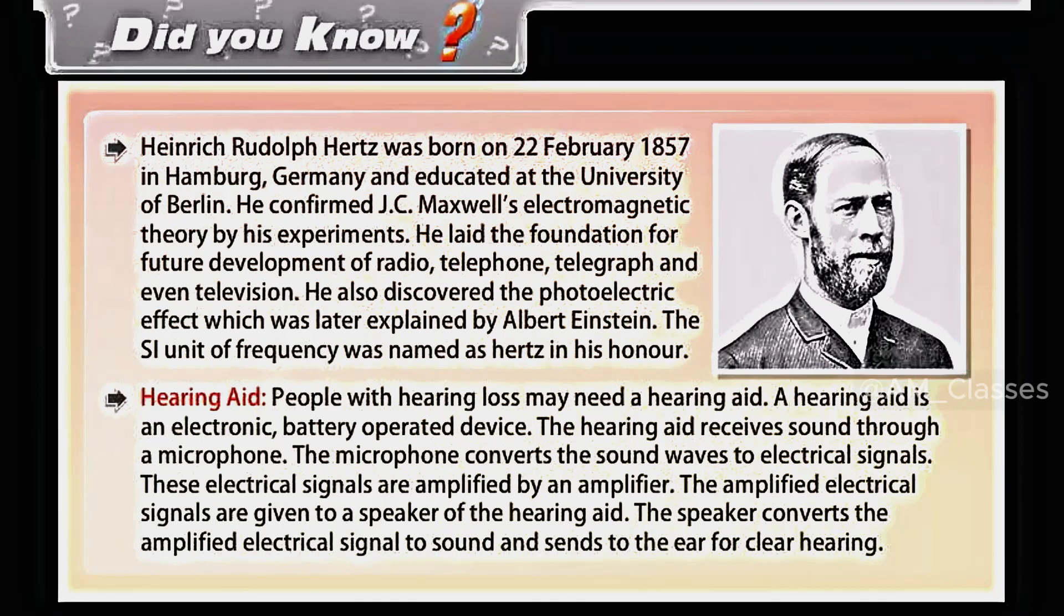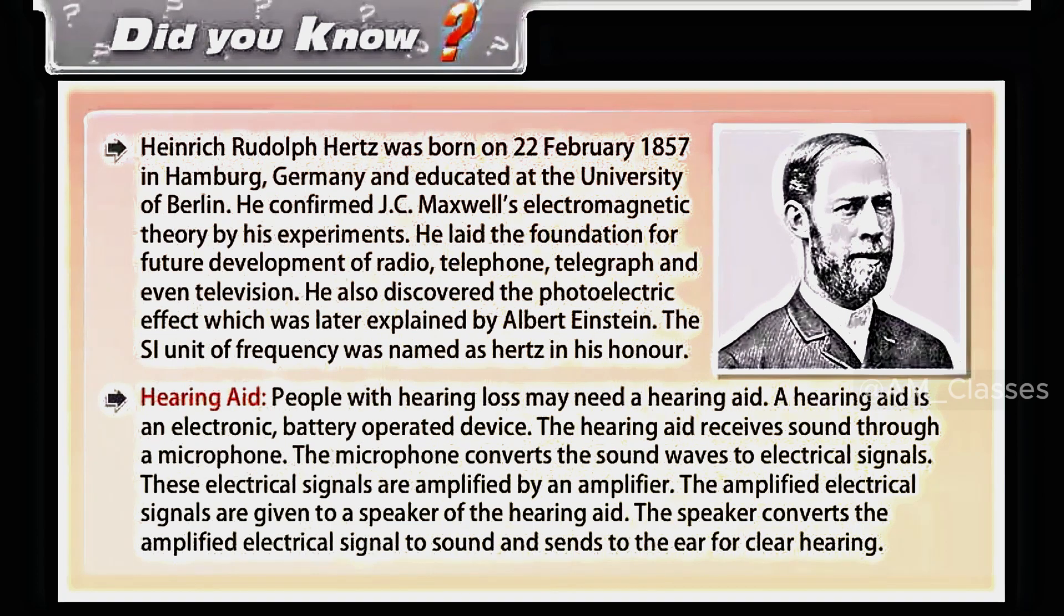Hearing aid. People with hearing loss may need a hearing aid. A hearing aid is an electronic, battery-operated device. The hearing aid receives sound through a microphone. The microphone converts the sound waves to electrical signals. These electrical signals are amplified by an amplifier. The amplified electrical signals are given to a speaker of the hearing aid. The speaker converts the amplified electrical signal to sound and sends to the ear for hearing.